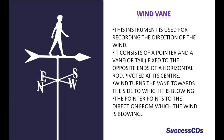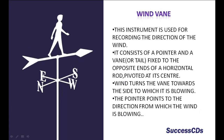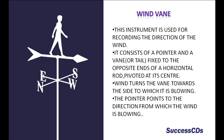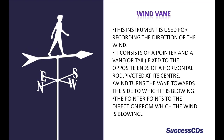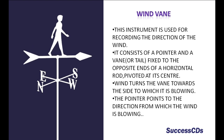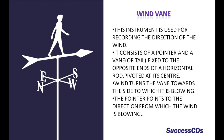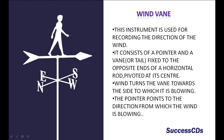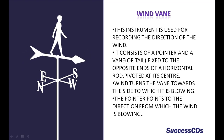The instrument used for recording the direction of the wind is called the wind vane. It consists of a pointer and a vane or tail fixed to the opposite ends of a horizontal rod pivoted at its center. The wind turns the vane towards the side to which it is blowing, and the pointer points to the direction from which the wind is blowing.